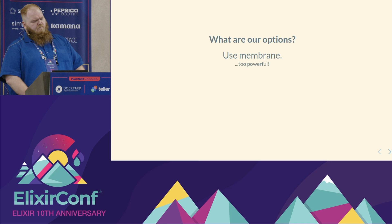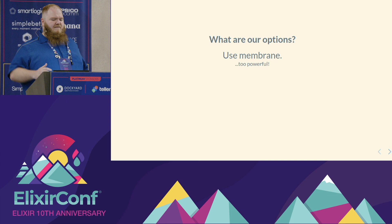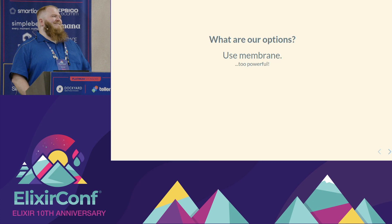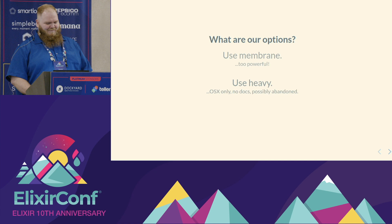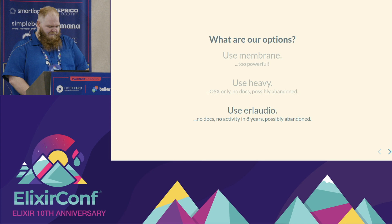So we want to actually create sounds in Elixir. You go on hex.pm and search for audio. What does it give back? You get Membrane. Membrane is awesome — it has a lot of really cool features around streaming media, audio, video, fan-out, all kinds of cool stuff. But I just wanted to play the sound. There's also something called Heavy — as far as I can tell, OSX only, no docs, might be abandoned. And Earl Audio, which also has no docs, is eight years old, but it's written in Erlang so I still trust it. But it might also be abandoned.